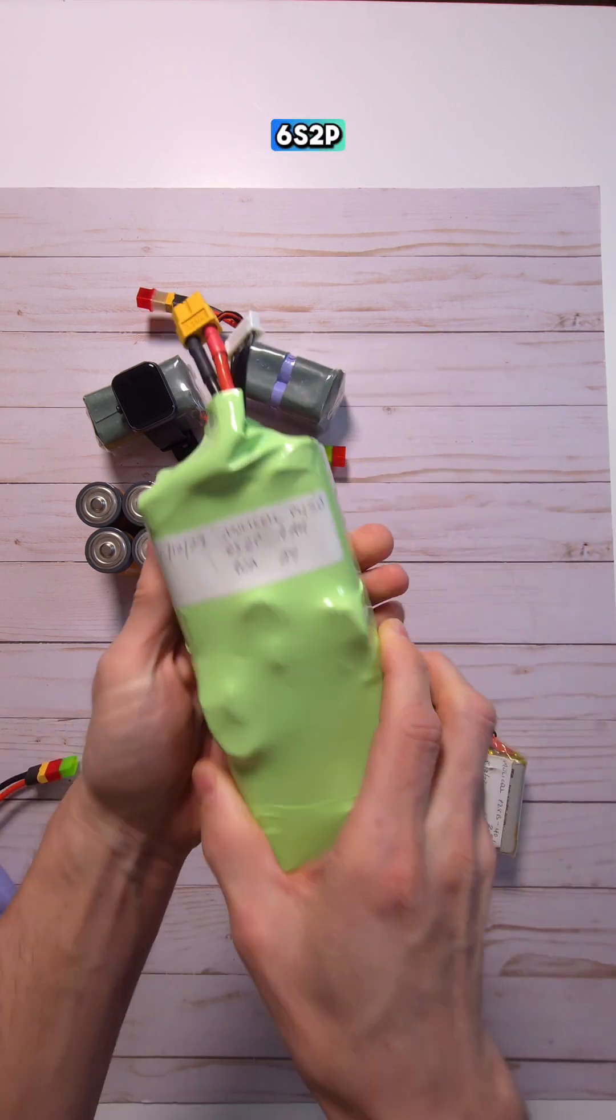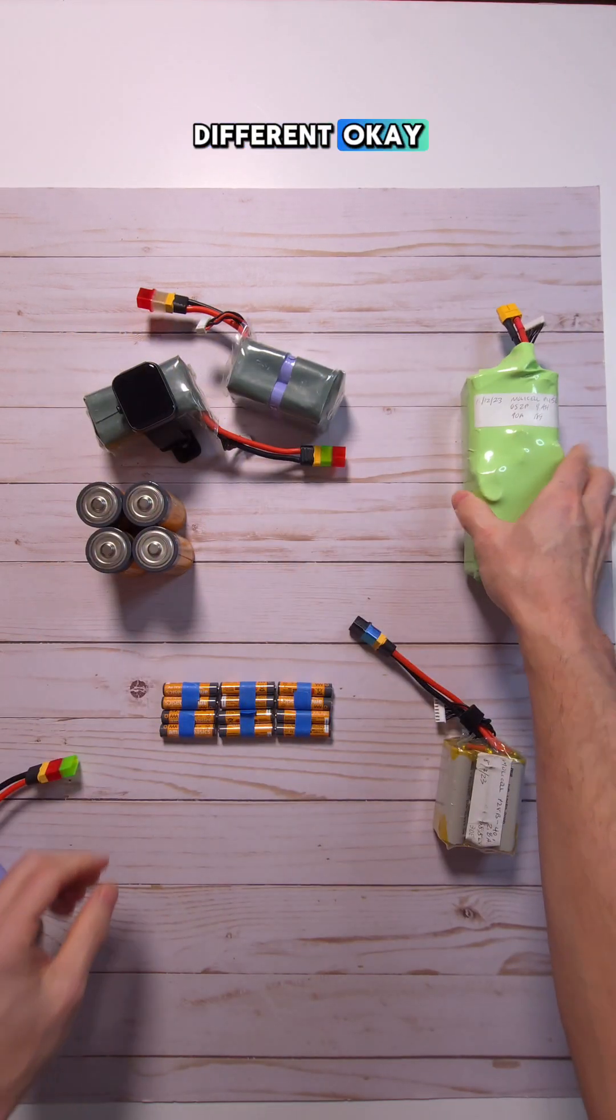Now, if we're making a 6S2P, things are similar, but slightly different. So to visualize that here,